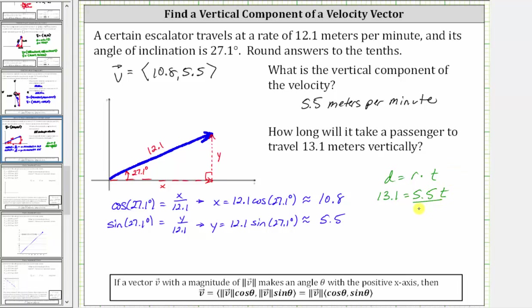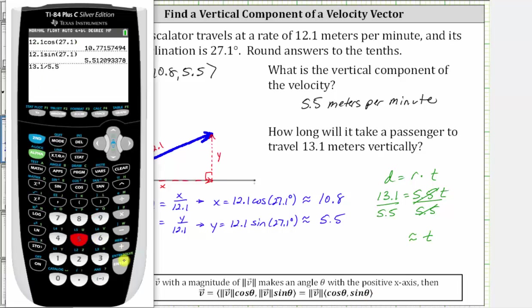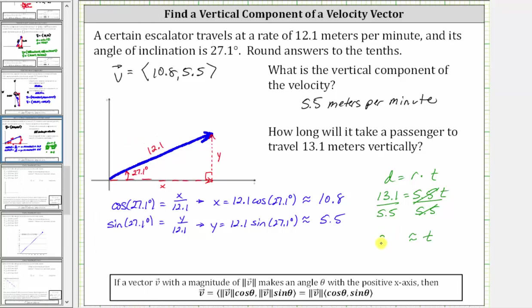To solve for t, we divide both sides by 5.5. We divide both sides by 5.5 meters per minute. Simplifying, t is approximately 2.4, which means it will take a passenger approximately 2.4 minutes to travel 13.1 meters vertically.